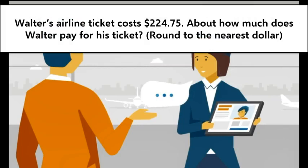Now, let's see what a problem looks like when rounding is applied to the real world. Walter's airline ticket costs 224 dollars and 75 cents. About how much does Walter pay for his ticket? Round to the nearest dollar.